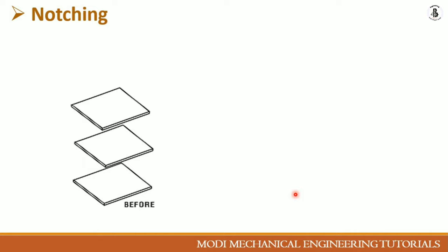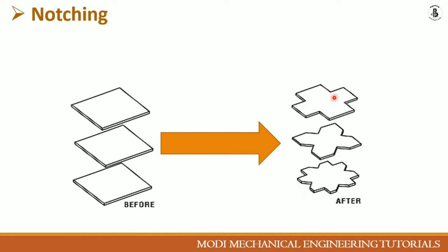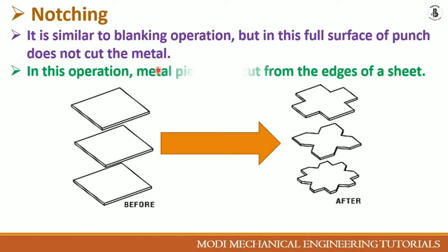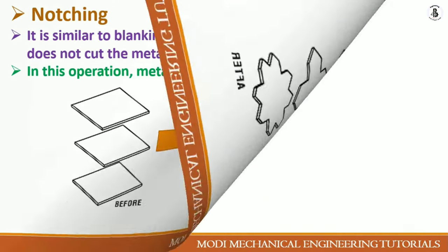Next is notching. The raw material made from sheet metal is cut from its outer edges into a specific shape. This is similar to blanking, but the full surface of the punch does not cut the metal — only the edges are cut. In notching, metal pieces are cut from the edges of the sheet only, not from the center.